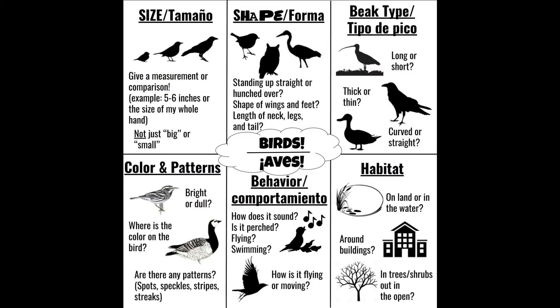When I'm outside, I find it helpful to have some categories to remember to compare. Here are six of the main categories — in other words, the main types of observations you can make to compare different birds that you see.